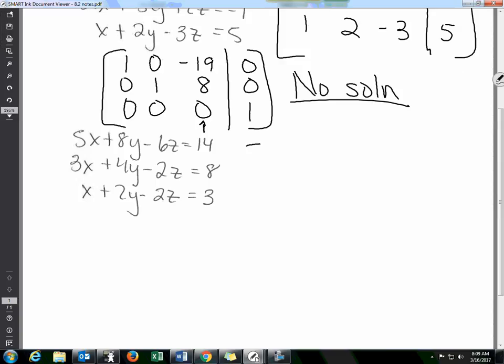So I'll do this again. So I'll write my augmented matrix: five, eight, negative six, fourteen; three, four, negative two, eight; one, two, negative two, three. So I will type that into my calculator.